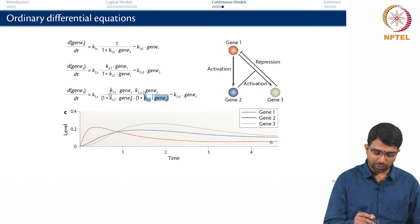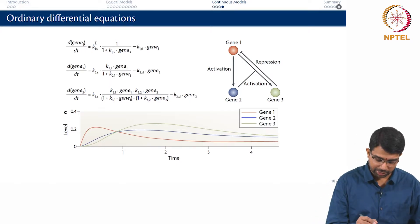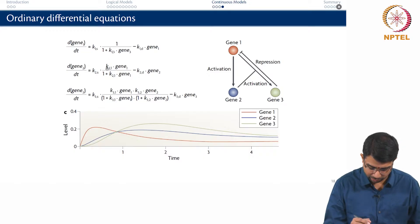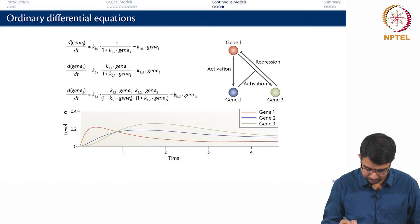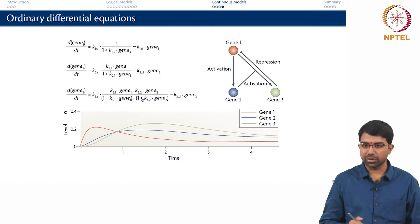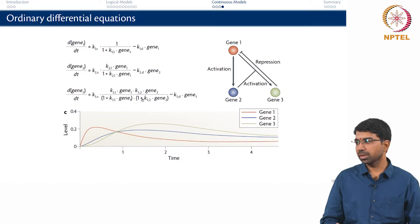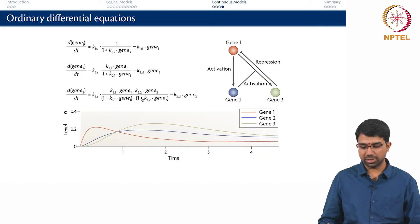The catch of course is I have to estimate K1 — counting up, there are 13 different parameters for a simple system with just 3 genes. It can become very challenging.